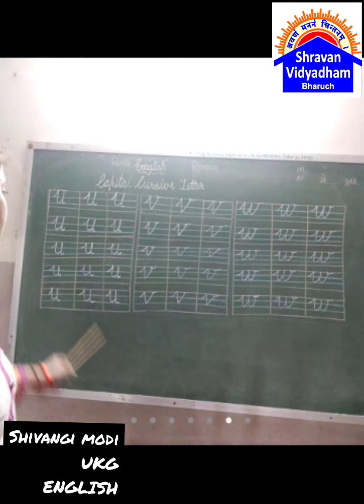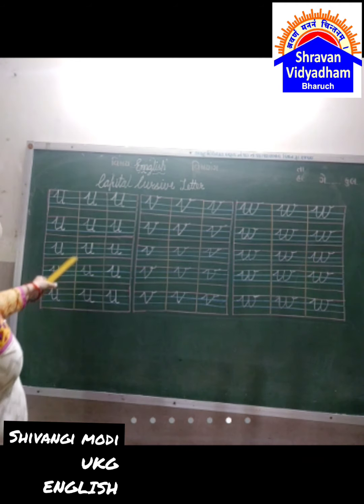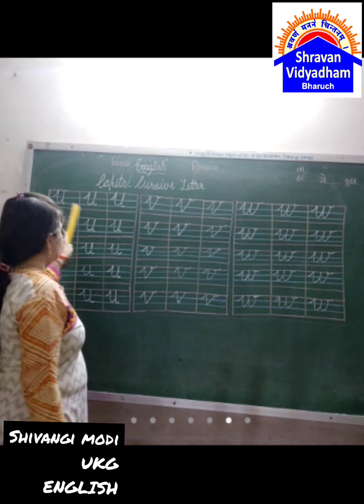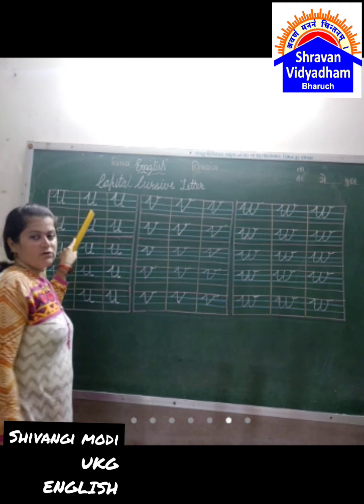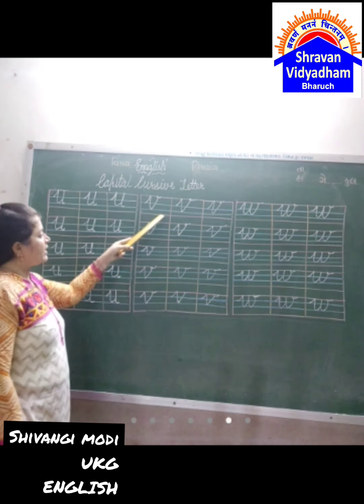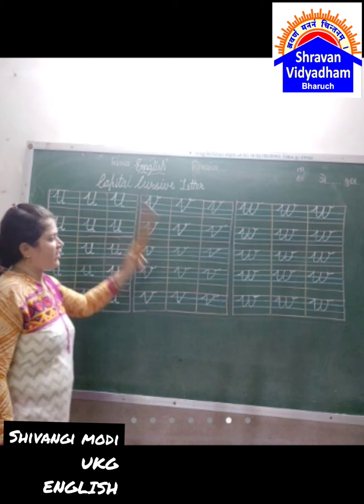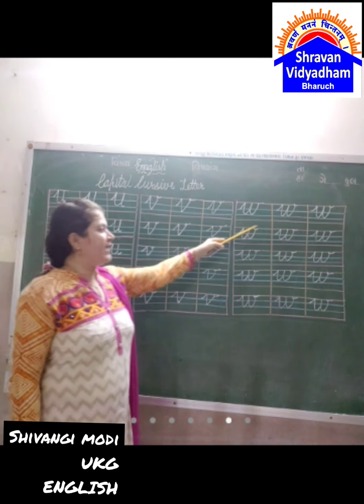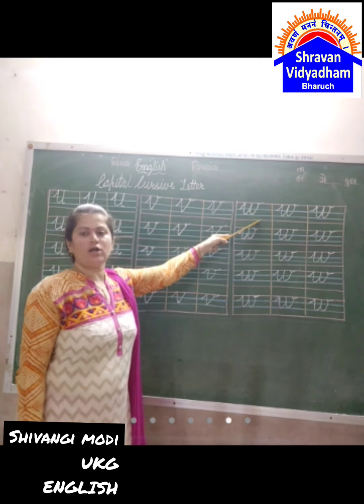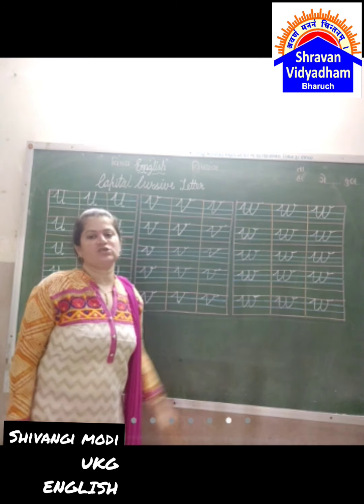Write in the proper three lines. W for Uniform, W for Pen, W for Watch.